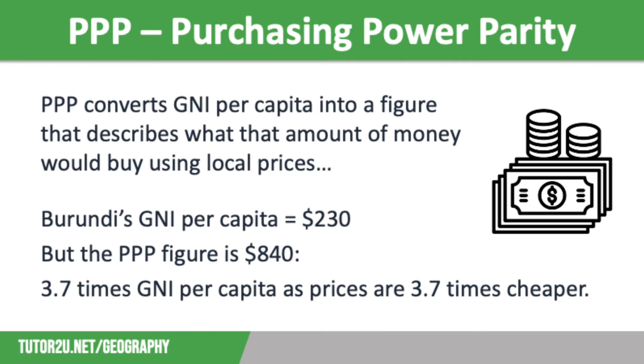The PPP figure of $840 is 3.7 times the GNI per capita value, which reflects that in Burundi prices are around 3.7 times cheaper than in higher-income countries.